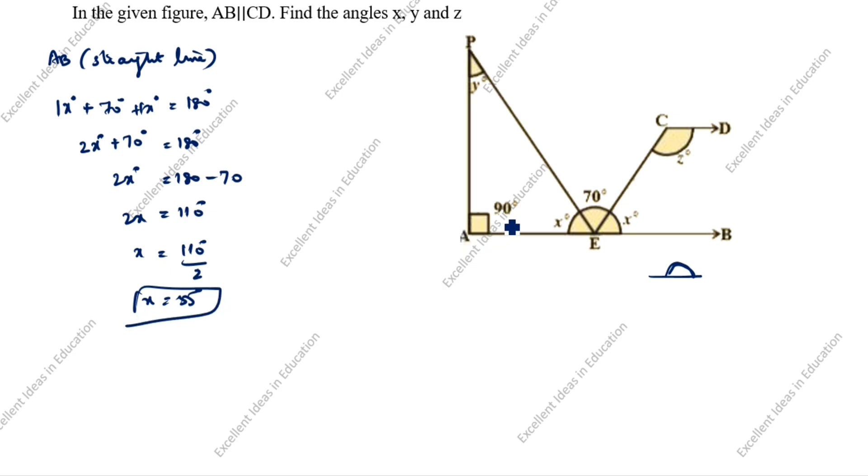So x value is 55 degrees. This is also 55 degrees, and this is also 55 degrees.